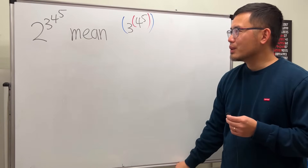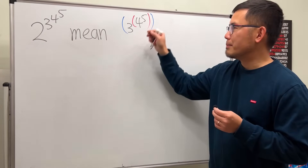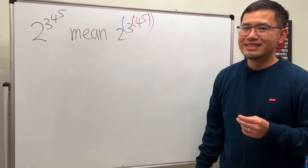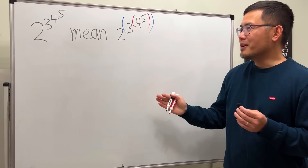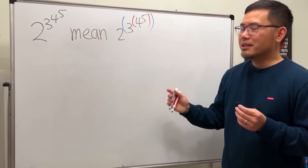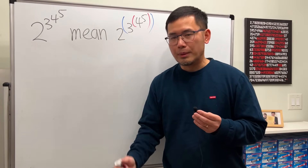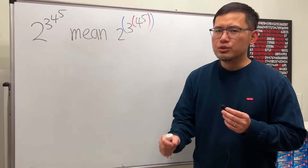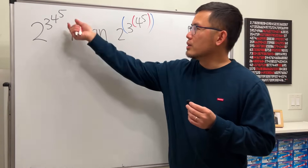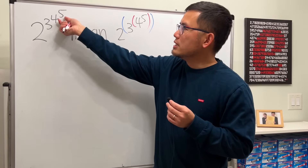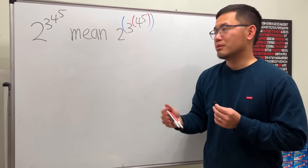After that we do 2 to that power. In my opinion this is pretty clear, because the order of operations says you should always do it from the inside to the outside. This is the most inside, and then just work outward.